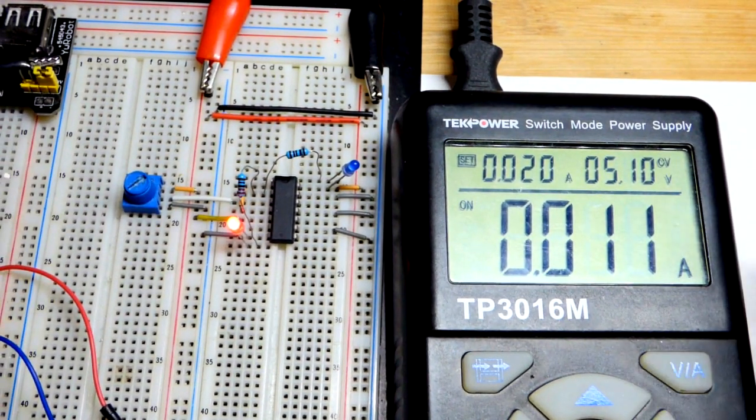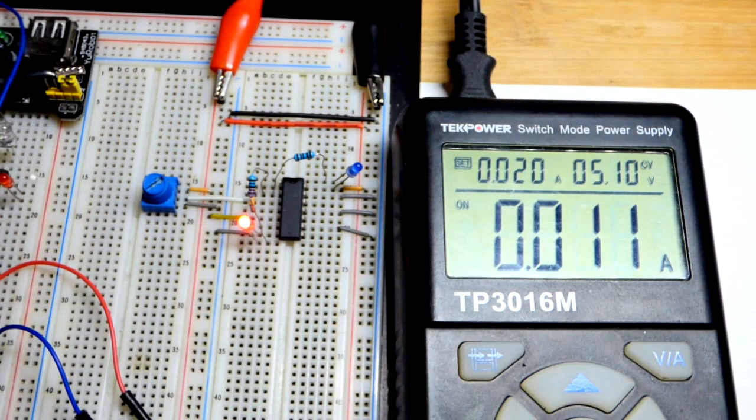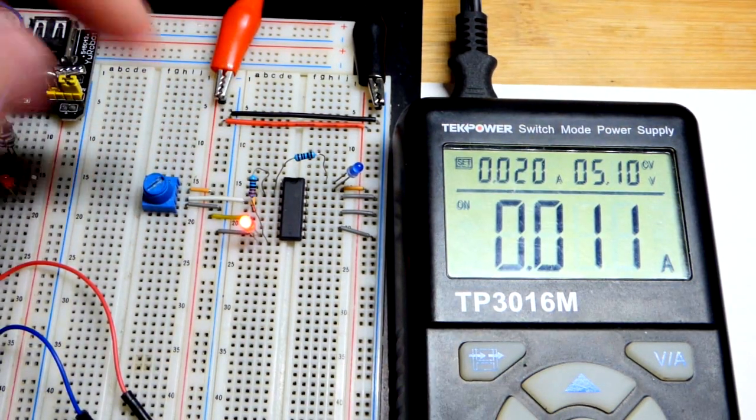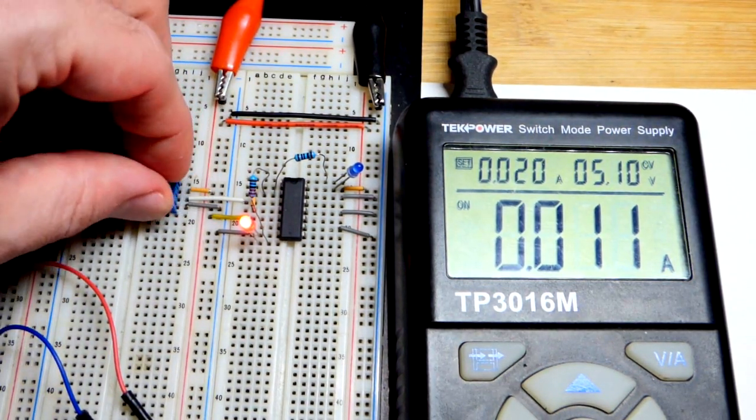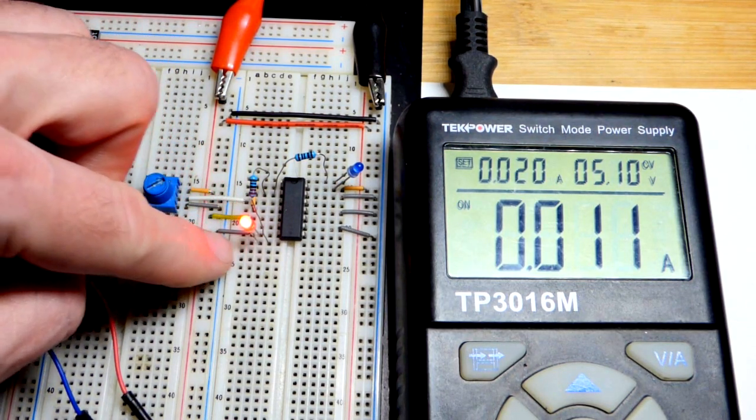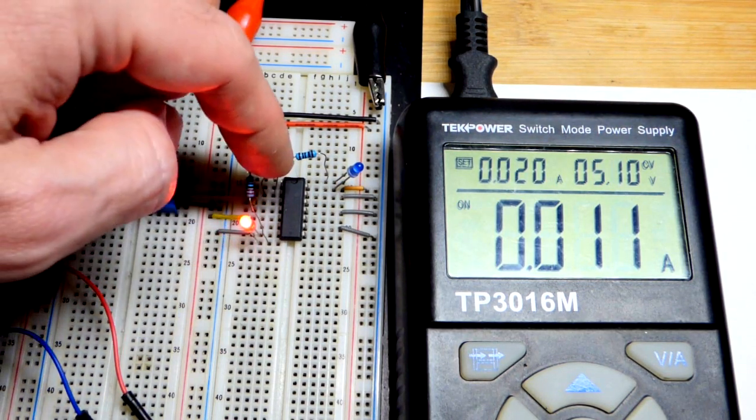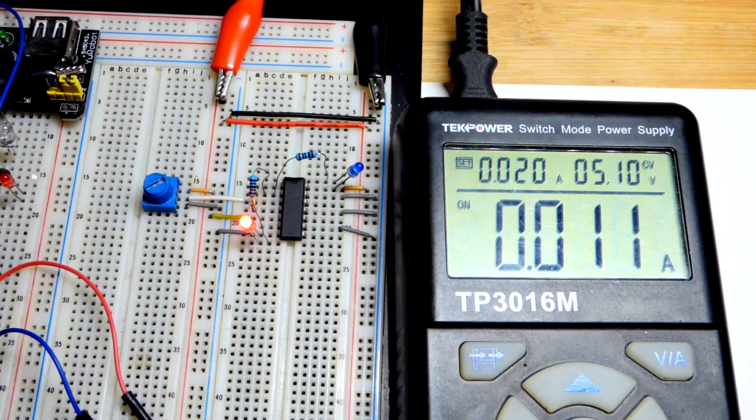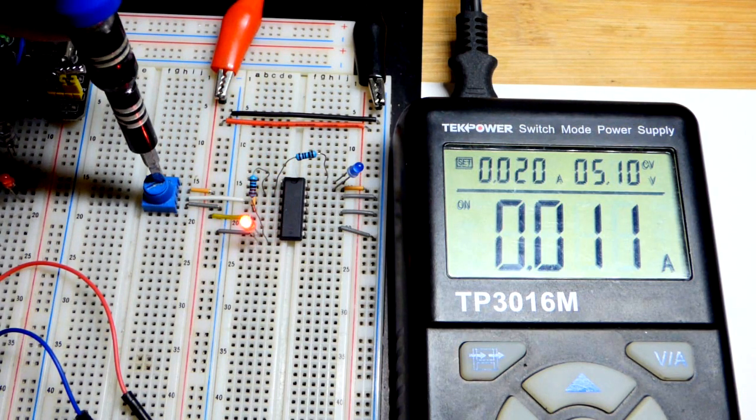Right there. You can see the red LED is lit. That's telling us that we have a high output because a high input. You can see we're all the way to the positive supply. So high input. We've got ground on that side of the LED, so you know that the output is as close to the positive supply as it can get.